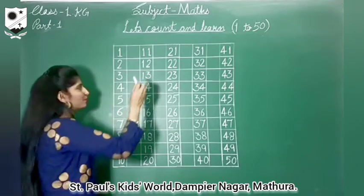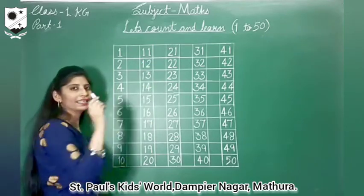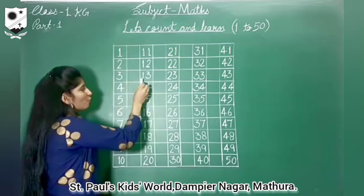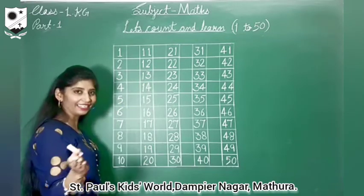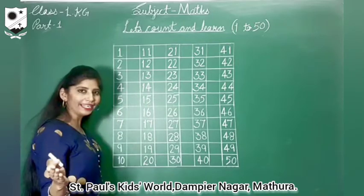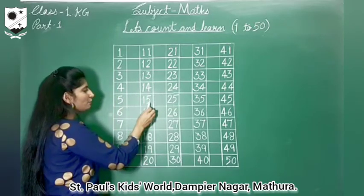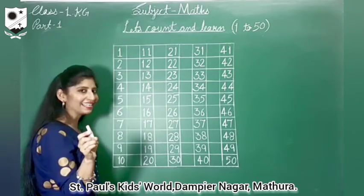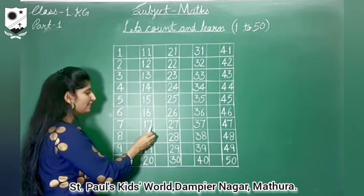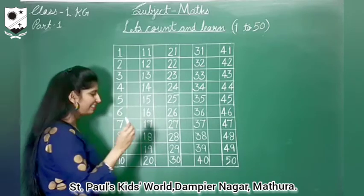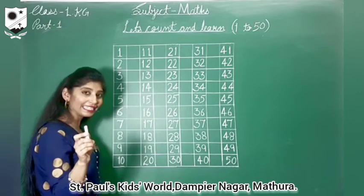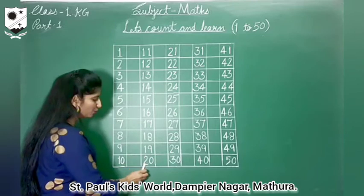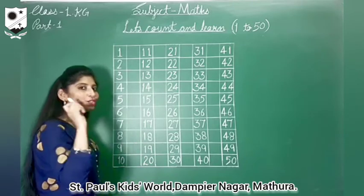Let's count again. 1-1, 11. 1-2, 12. 1-3, 13. 1-4, 14. 1-5, 15. 1-6, 16. 1-7, 17. 1-8, 18. 1-9, 19. 2-0, 20.